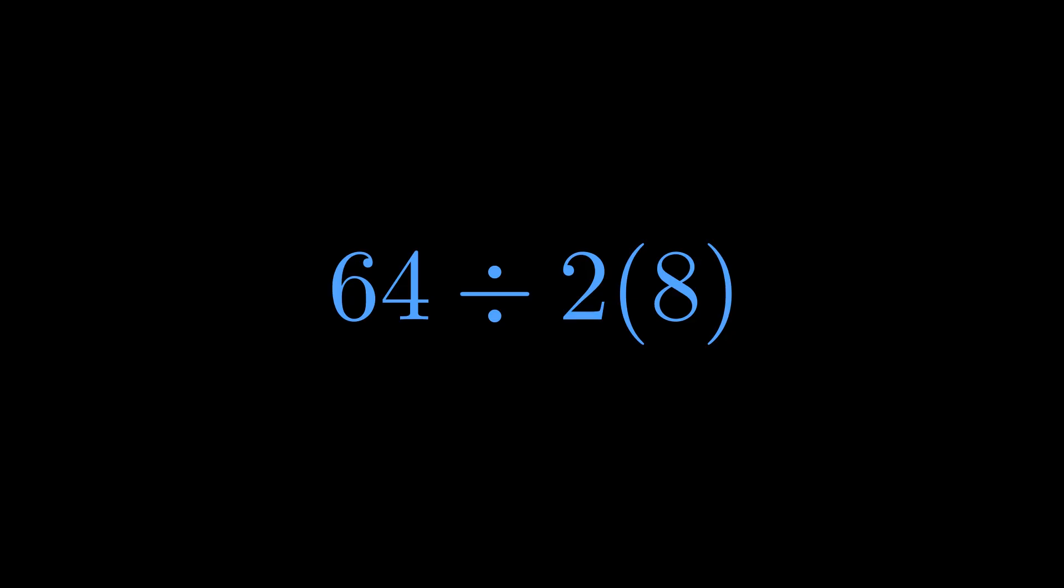And here's the key moment where people diverge. There's something about the way 2 is written right next to the 8. No multiplication sign, just 2 parenthesis 8. It feels like they belong together. This is implied multiplication, and many people believe it should be done first.